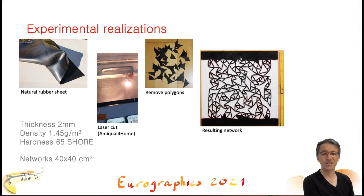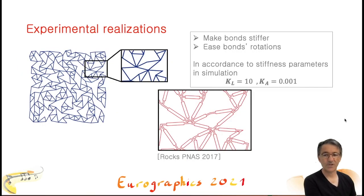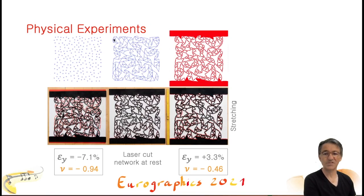Let us now show the physical realization that we made from our computed auxetic networks, and compare the deformation behavior with the numerically simulated deformations. We choose a fairly soft, flexible material, a sheet of rubber 2 mm thick, and with hardness of 65 Shore A. We used a laser cutter from our fab lab to fabricate the networks that we calculated. The size of this network is around 40 square centimeters. We followed previous works and make the edges more rigid and easier to rotate around the vertices. This is coherent with the stiffness constants chosen for the simulation. The linear springs are several orders of magnitude stiffer than the angular springs. At the top, here we see the vertices and the calculated network in blue. In red, the same network prepared for laser cutting. The fabricated network is shown here in the photograph in the middle.